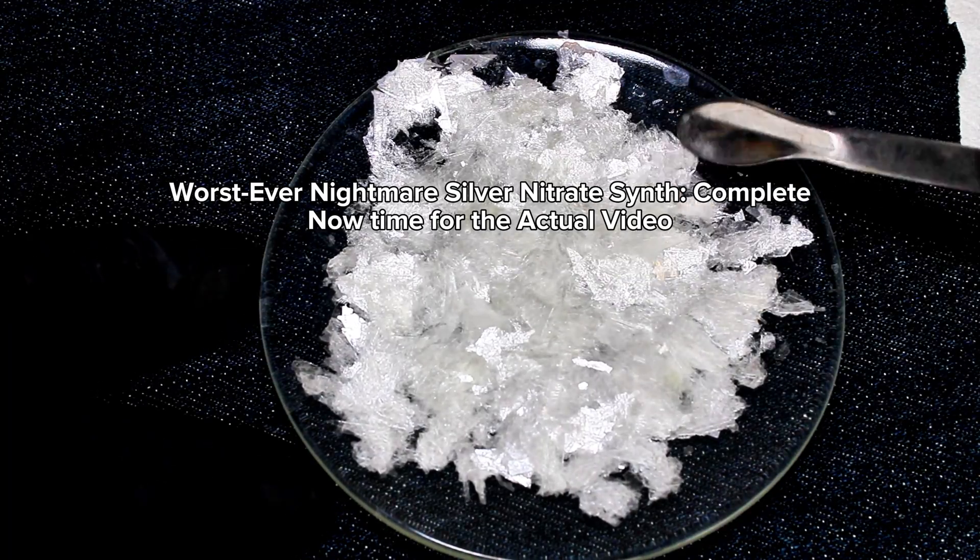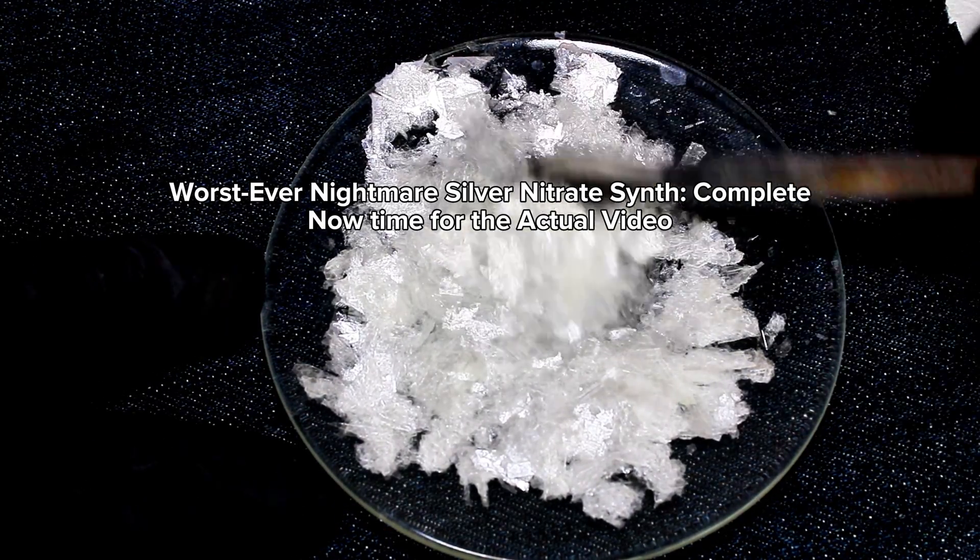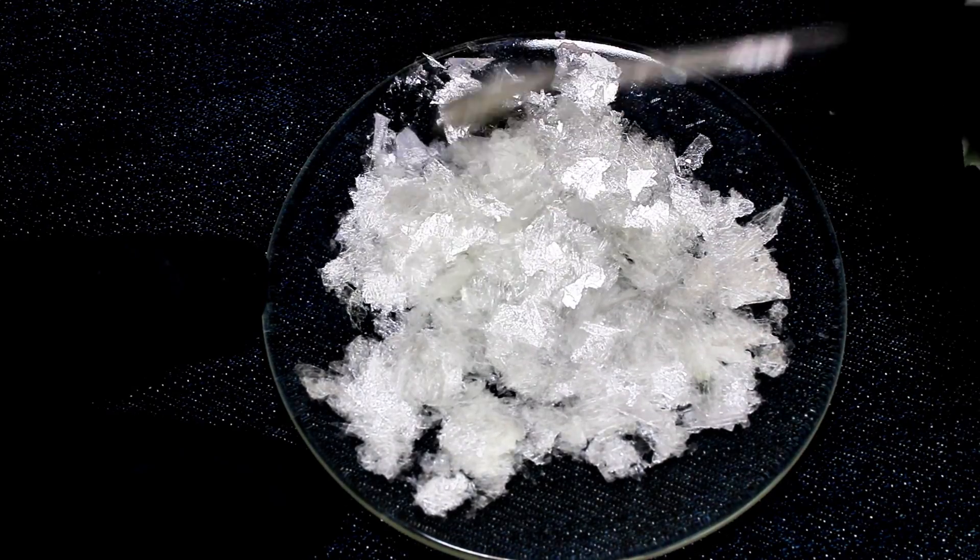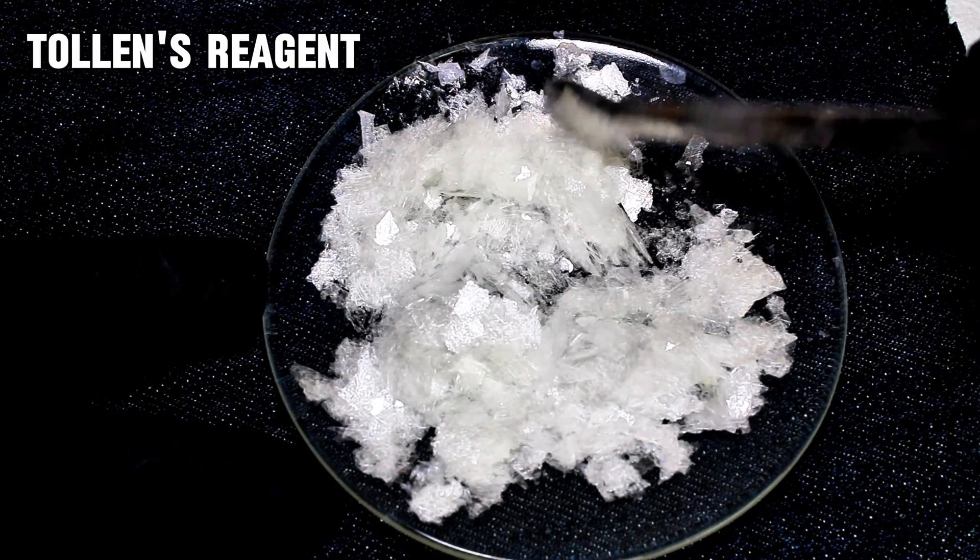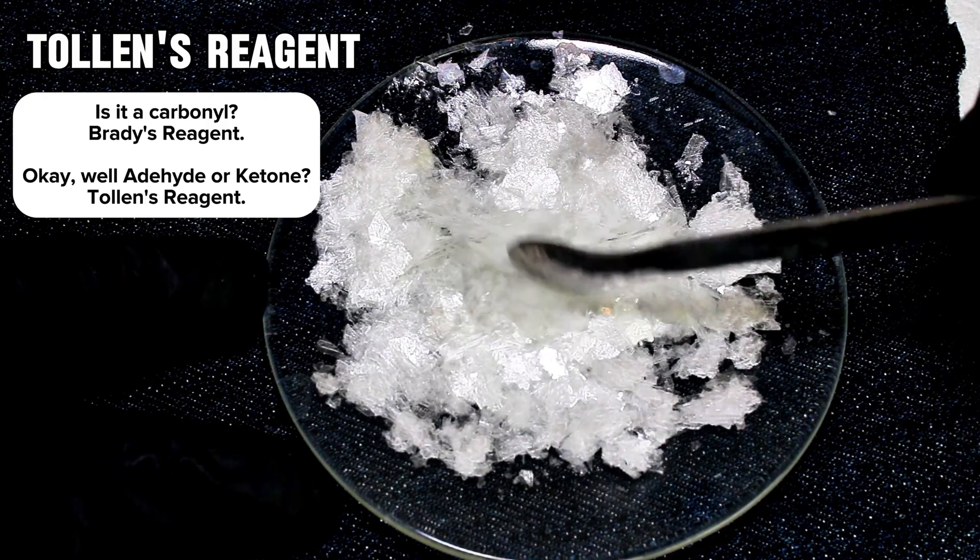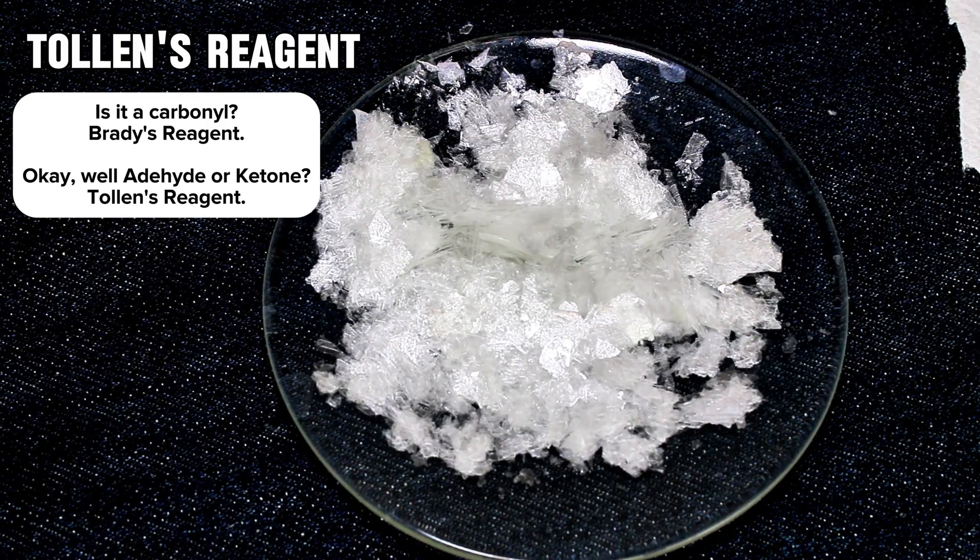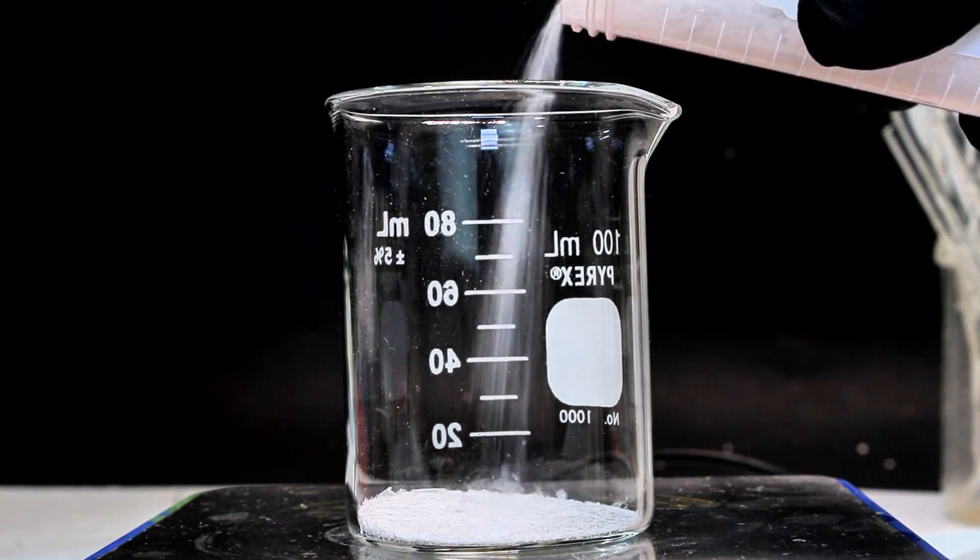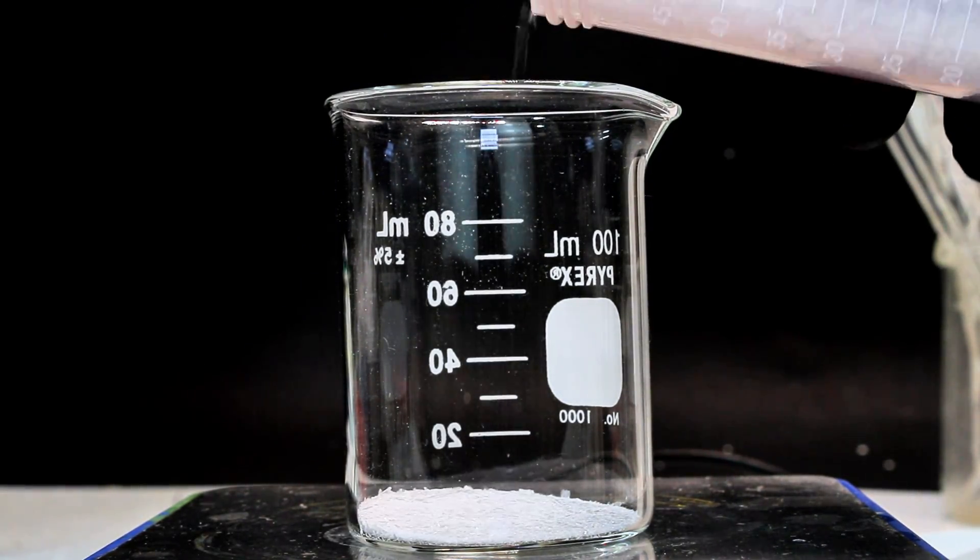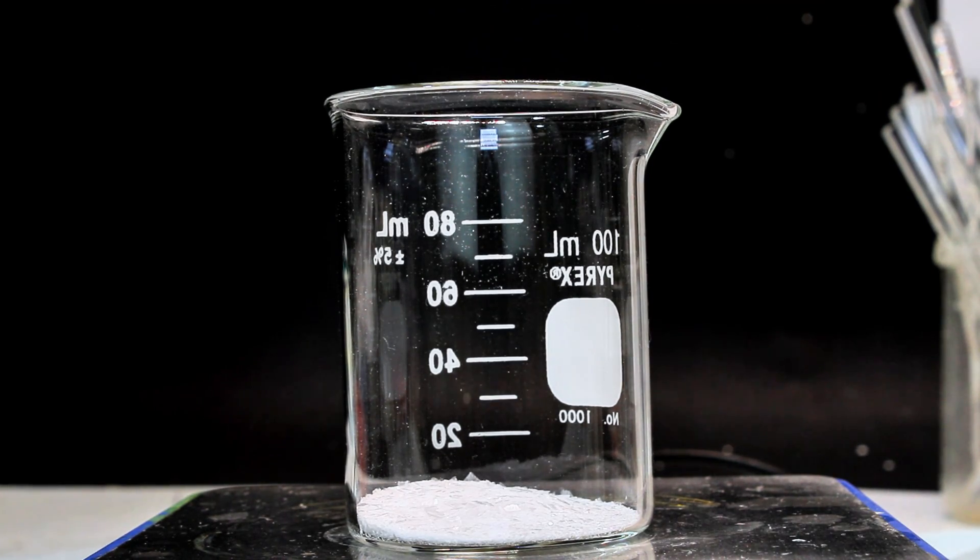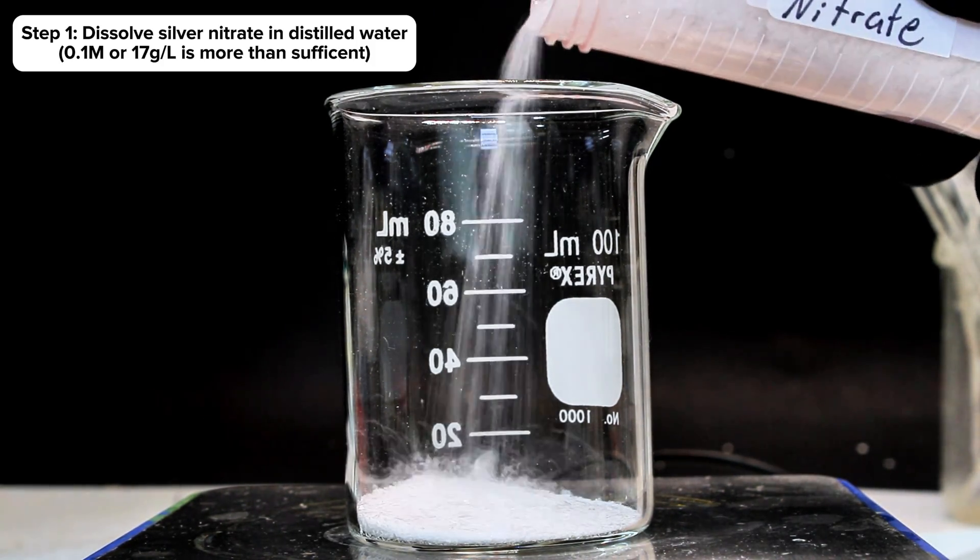Anyway, now that I've finally prepared some silver nitrate, it's time for the silver mirror. Silver mirroring is applied using a mixture of chemicals called Tollens reagent. Tollens reagent is used mostly in analytical chemistry to distinguish between aldehydes and ketones after a carbonyl group has been identified using Brady's reagent. I'll come back to this in a minute, and in the meantime, to make some Tollens reagent, the first thing I needed to do was to re-dissolve some of my silver nitrate in a small amount of distilled water.